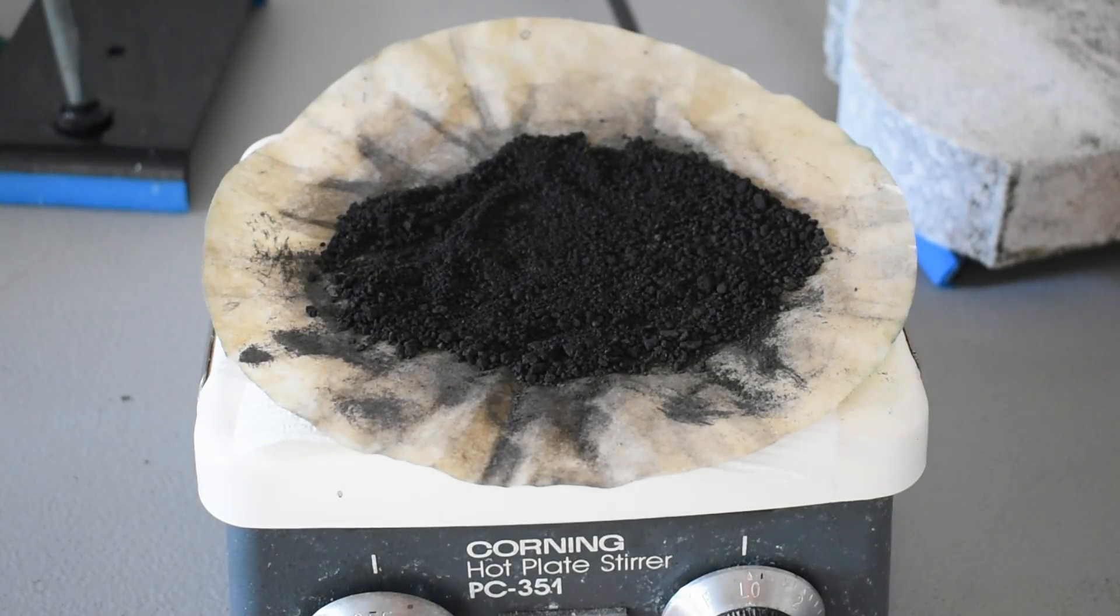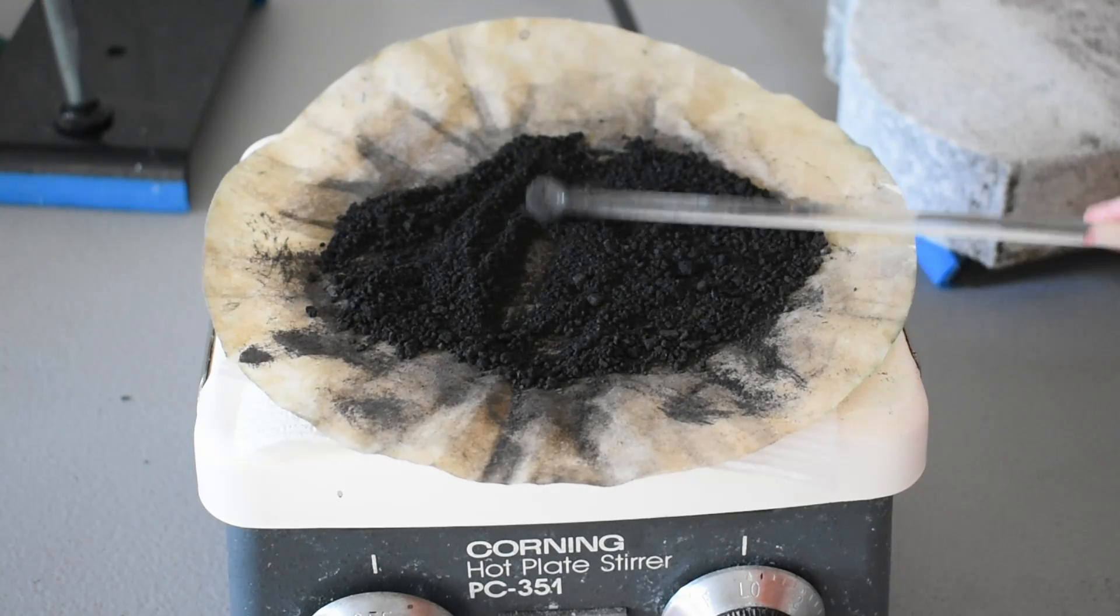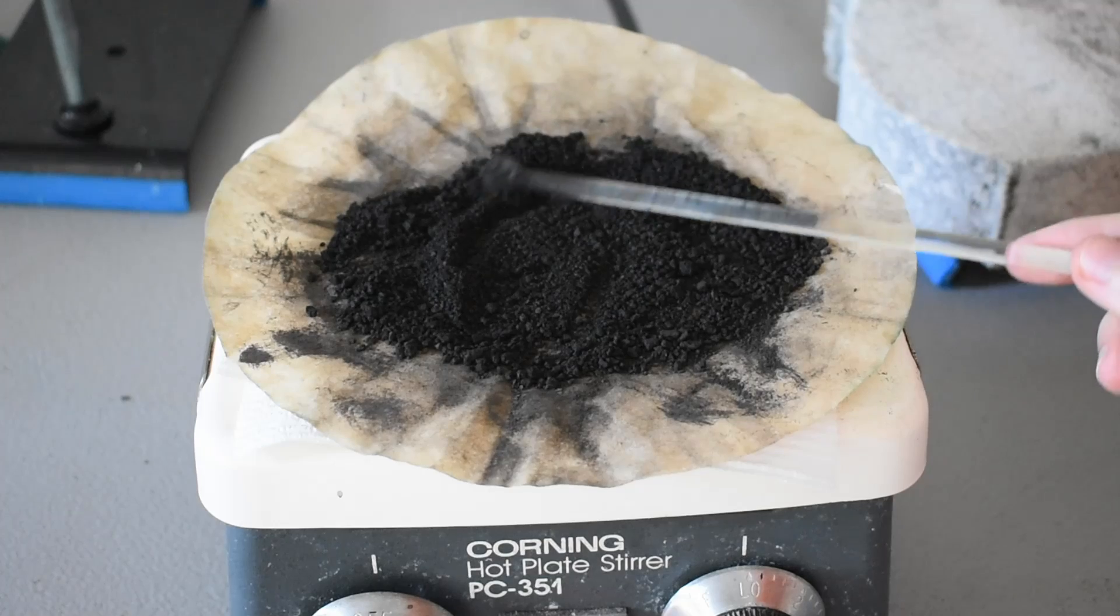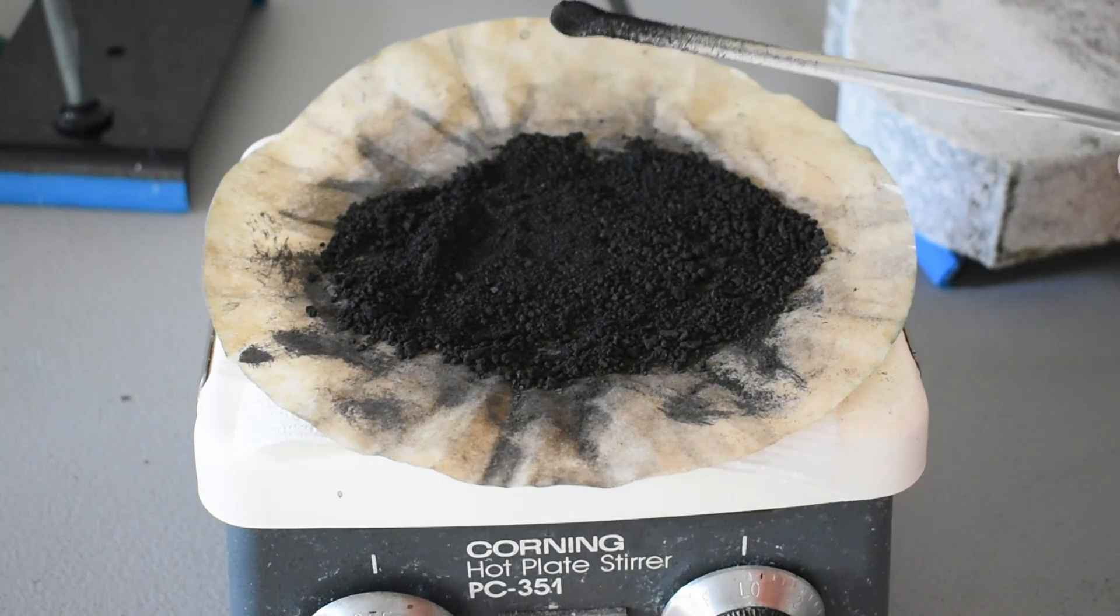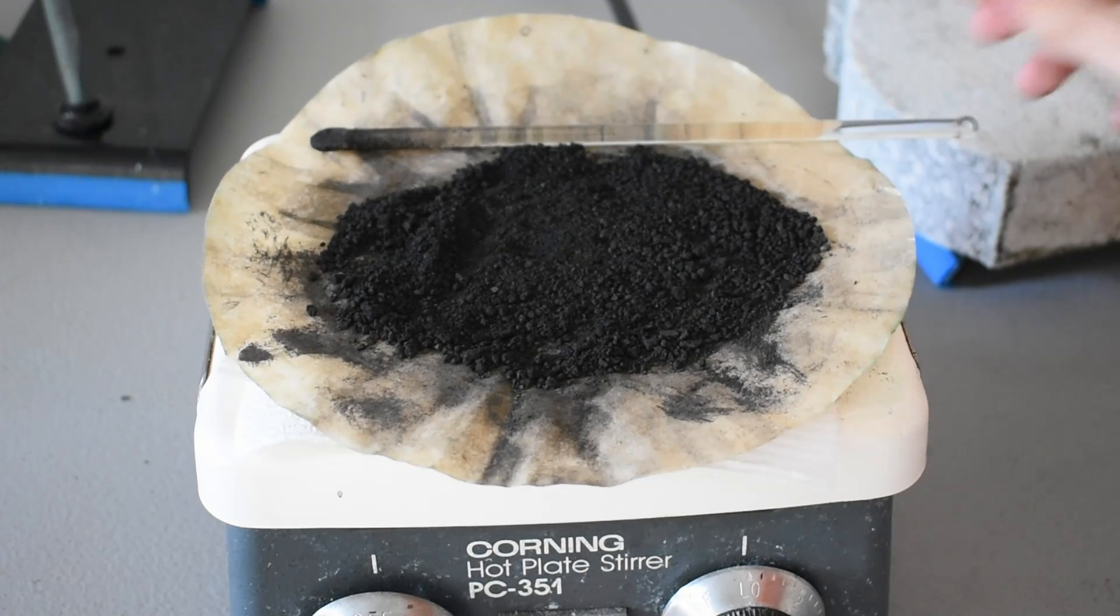Here we are after filtering. I've had it on the hot plate drying for a while. You can see it's a nice dark, almost black powder, still a little bit wet. So I'm going to leave it here to dry for a little bit longer. And then when I'm satisfied, I'll put it in a little container and we'll be done.